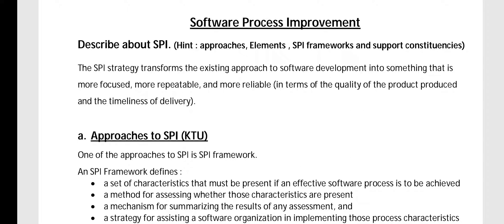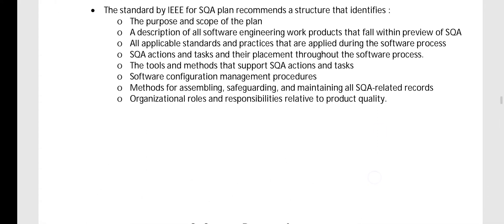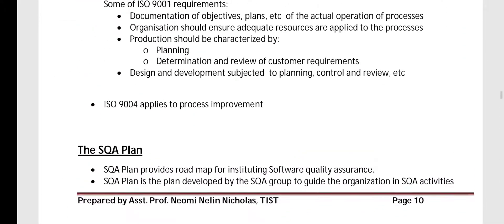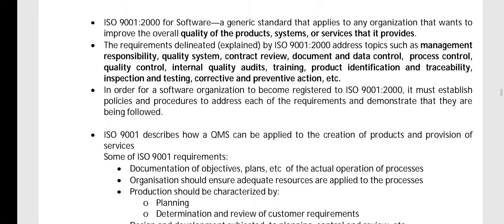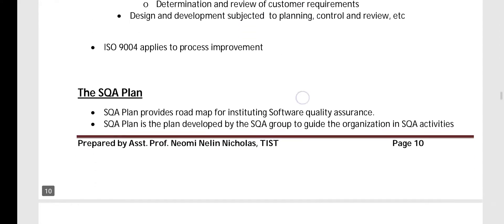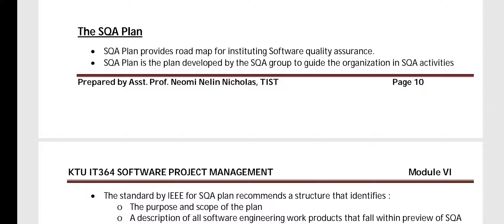Welcome to the third video of module 6. Today we are discussing software process improvement, SPI — its approaches, elements, SPI frameworks, and support constituencies. In the previous video we discussed ISO certifications and the SQA plan, which is a roadmap for SQA — software quality assurance.